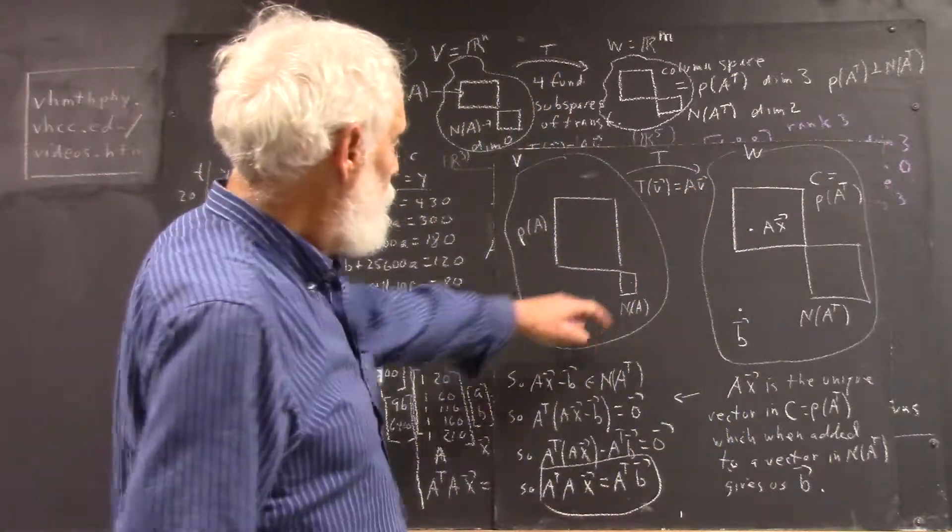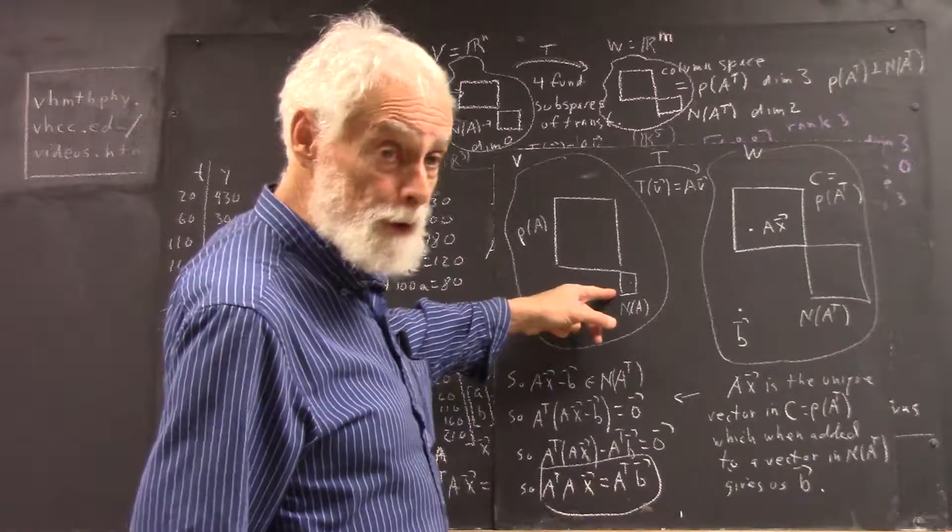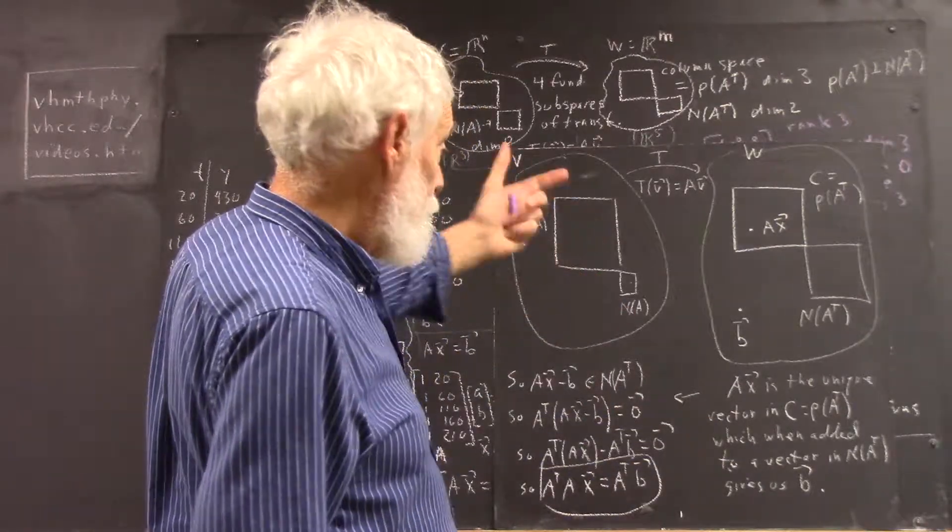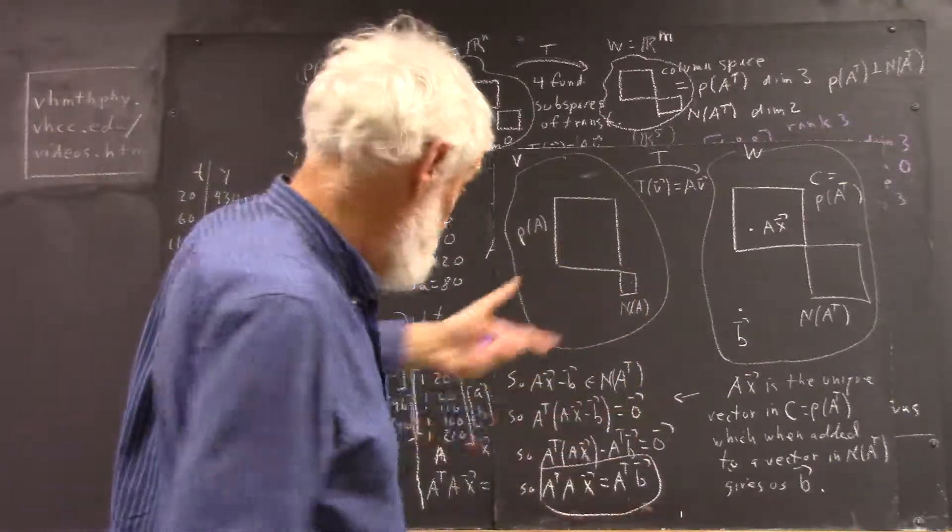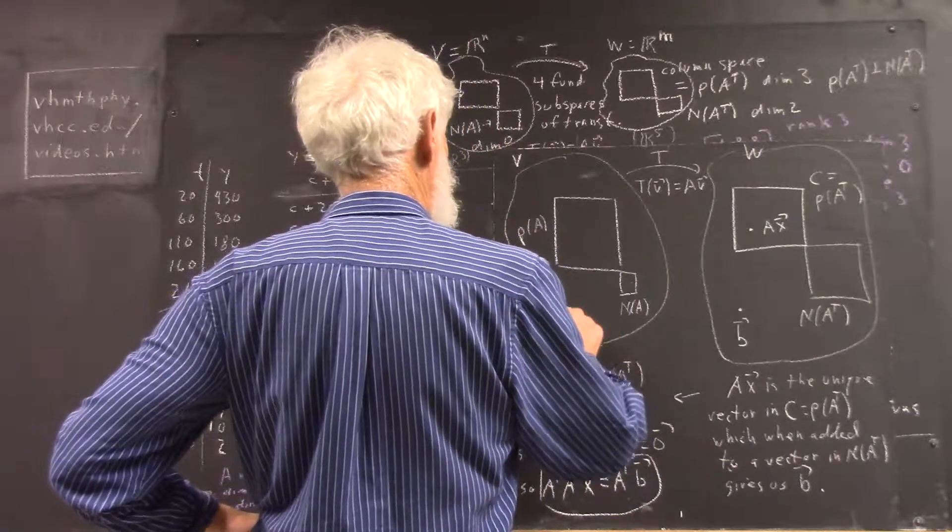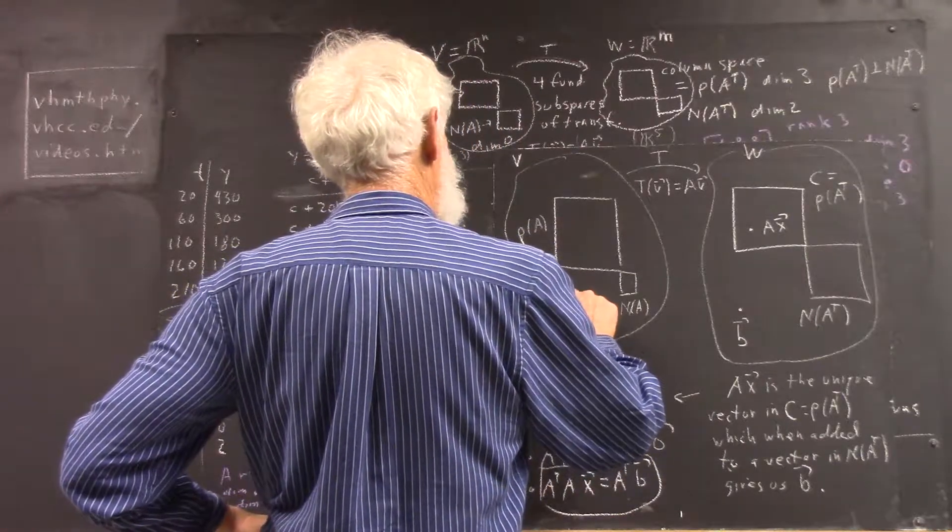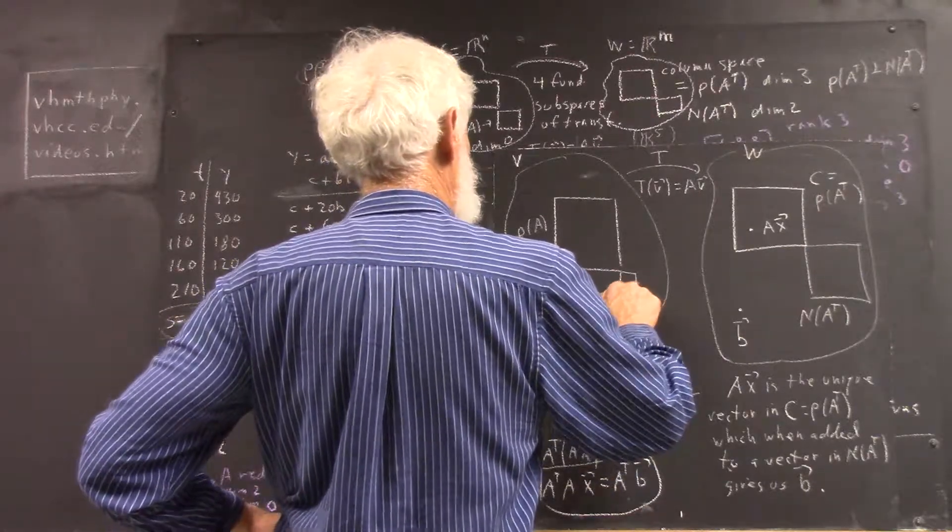You have, then, this null space, which in the examples we're seeing has been empty. Not empty, it's in dimension zero. It consists only of the zero vector. The null space is also called the kernel of the transformation T.